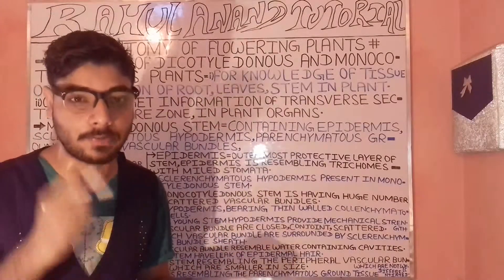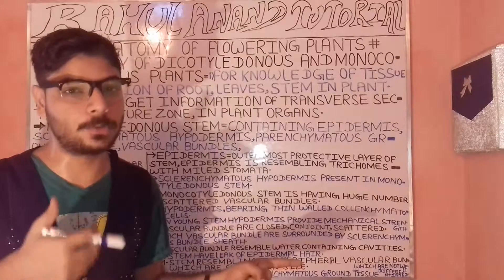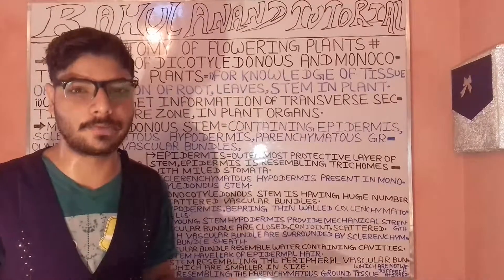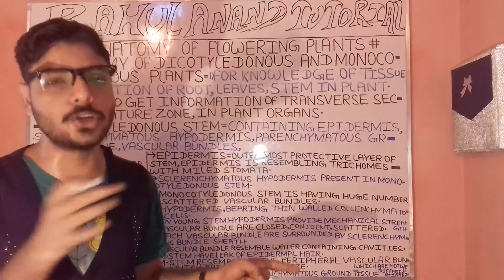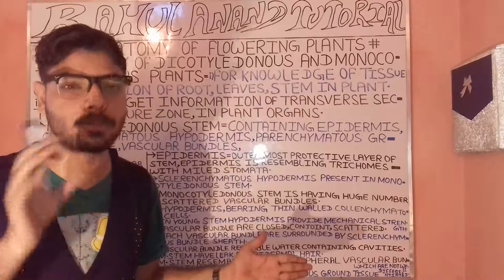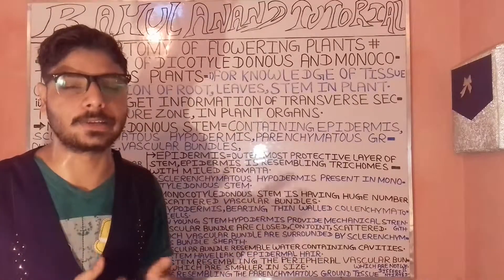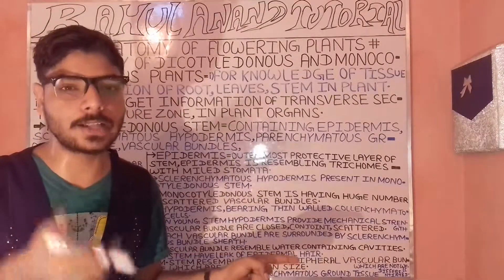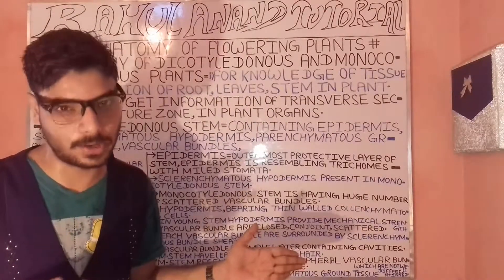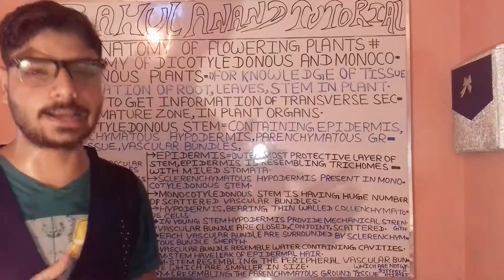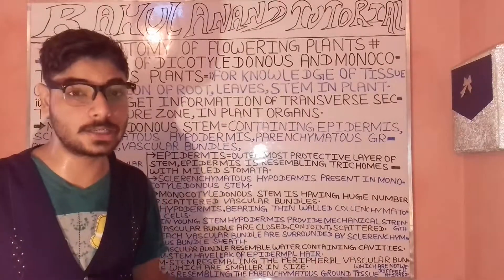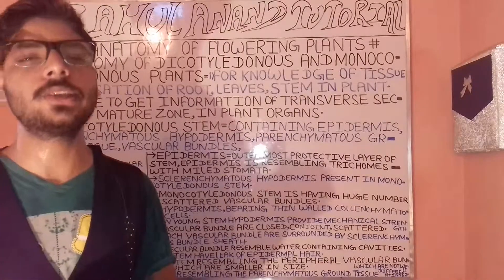If there is no flexibility, many different plant parts — such as the stem and other parts — could break down. Collenchyma tissue plays an important role in resisting the stem from breakdown and provides flexibility. For example, when airflow occurs and pressure from wind is higher in one direction, the stem will bend in that direction, supported by the collenchyma tissue.